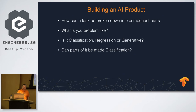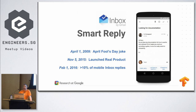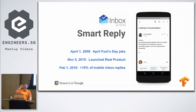A classic example is Smart Reply inside Google. It started out as an April Fool's joke in 2009 — Google made a product that would just reply to your emails. The first academic papers approached it as a sequence-to-sequence generative model: it would read your subject line and email text, and then generate a bunch of text for a reply.